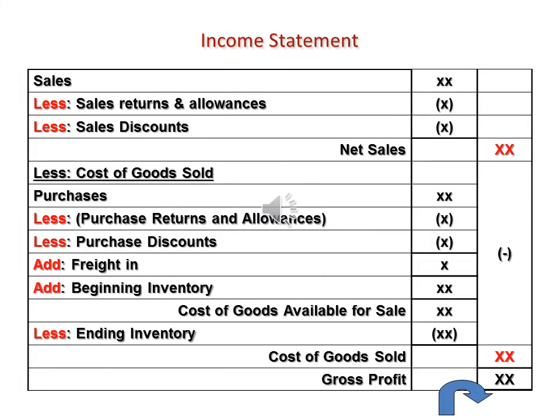The income statement of a merchandising company can be prepared on the following form. Start with Sales, less sales returns and allowances, less sales discount, to arrive at net sales, then less cost of goods sold.